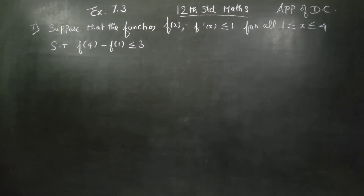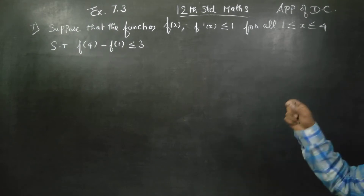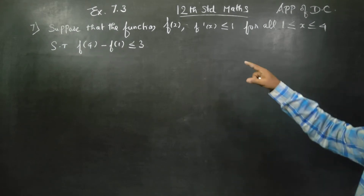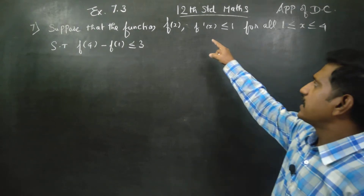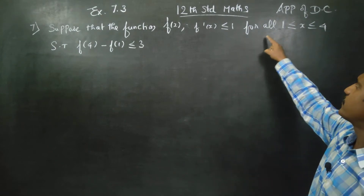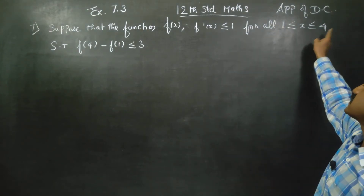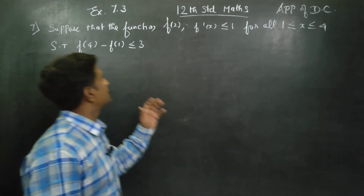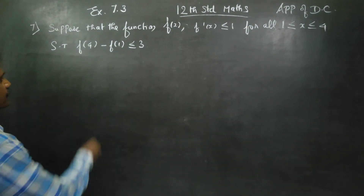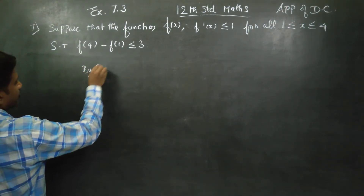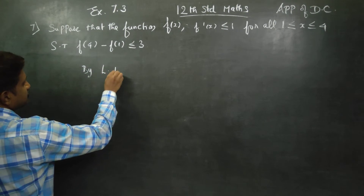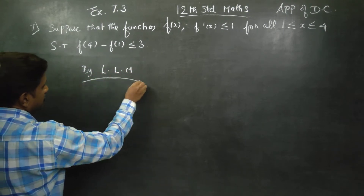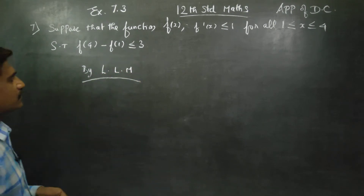Hello to all standard students. In exercise number 7.3, sum number 7: suppose that the functions f of x, f'(x) is less than or equal to 1, for all 1 is less than or equal to x less than or equal to 4. Show that f(4) minus f(1) is less than or equal to 3, by Lagrange's mean value theorem.